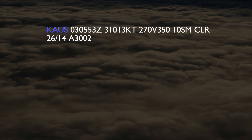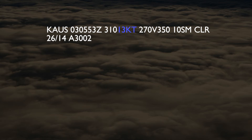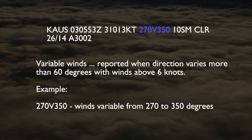Here is another example: a report for Austin issued on the third day of the month at 0553 Zulu. It indicates winds from 310 degrees at 13 knots. The next item says the winds are variable between 270 degrees and 350 degrees. Variable wind direction is reported when the wind direction varies by more than 60 degrees and the wind speed is above 6 knots. The report goes on to state that the visibility was 10 statute miles with clear skies, a temperature of 26 degrees, dew point of 14, and an altimeter setting of 3002.